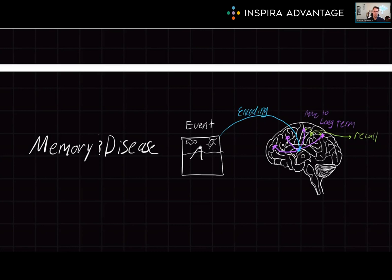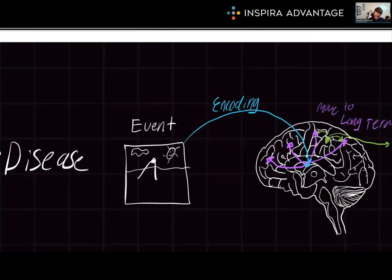First, let's start with where memory begins, encoding. Encoding is the process of putting new information into memory, shown here in blue. It can be effortful or automatic. There are also different types of encoding, such as semantic encoding, which is stronger than both acoustic and visual encoding. This means that if we want to remember something for a long time, it's best to attach meaning to it. Don't worry, we're going to dive in all about what these different types of encodings are in just a moment.